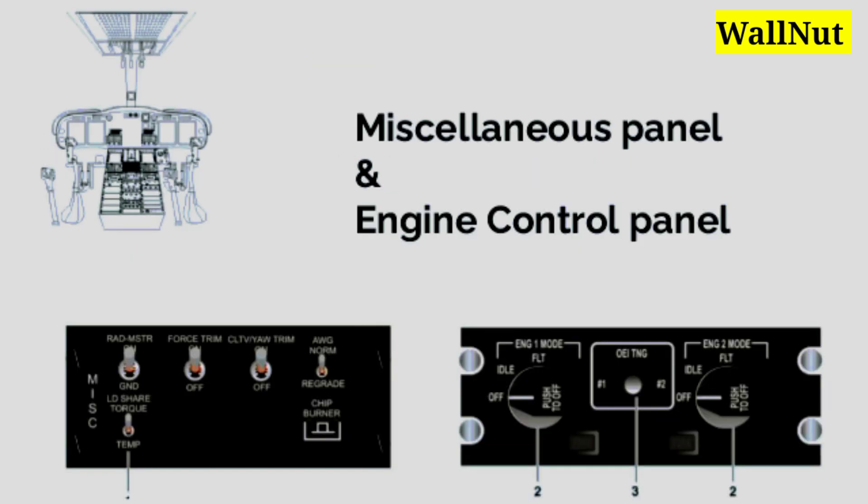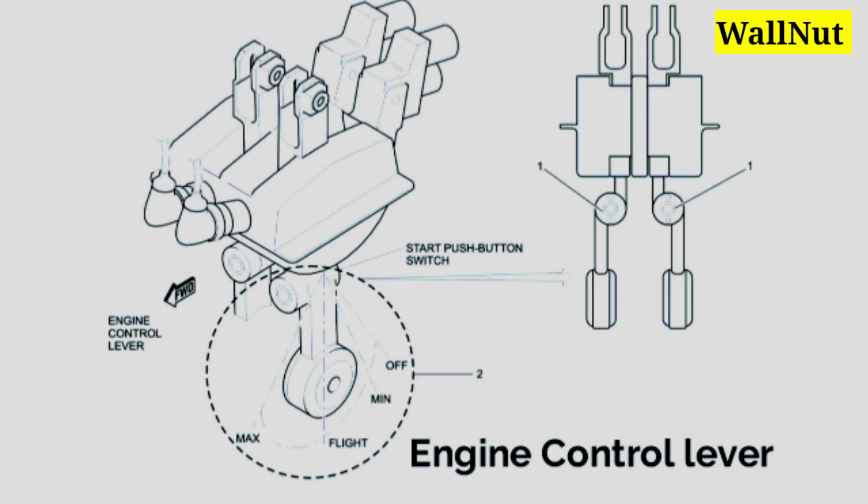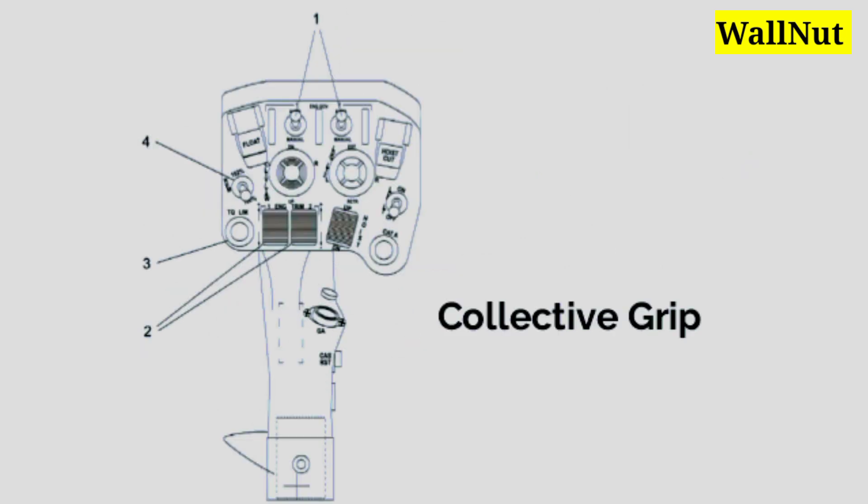On your screen, the miscellaneous control panel is on the left side and the engine control panel is on the right side. This is the engine control lever with its four positions: off, minimum, flight, and maximum. This is the collective grip.